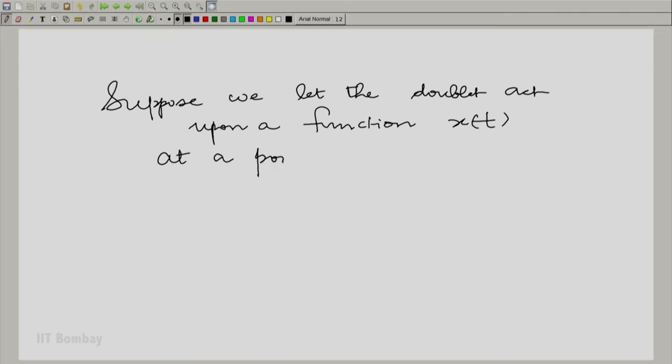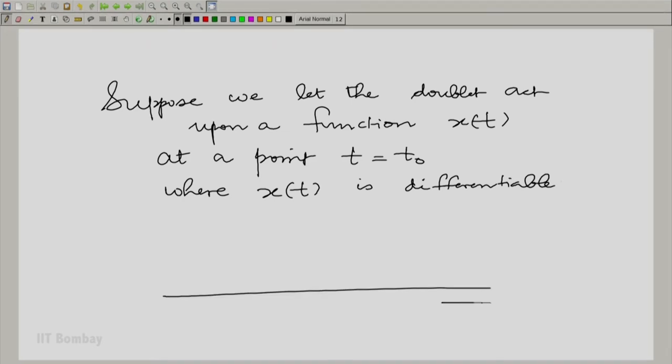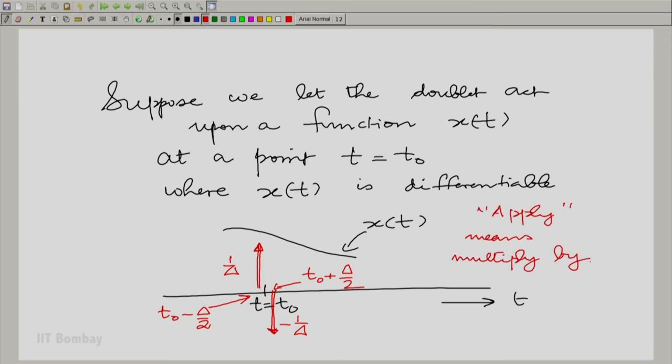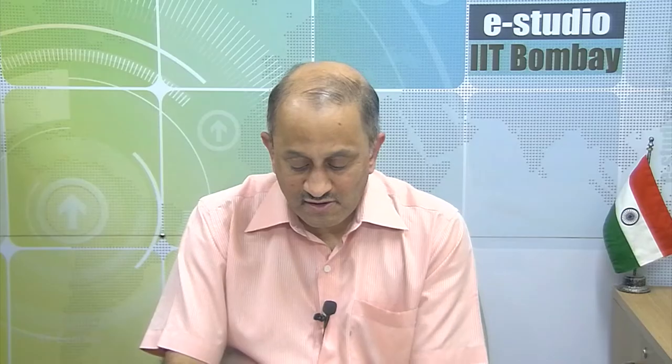suppose you applied this doublet upon a function x(t). At a point, say t equal to t₀, where x(t) is differentiable, so let us visualize the situation. You have this x(t). This is the point t equal to t₀ and you put this doublet here. Let us put the doublet there. You have two impulses coming closer and closer to one another. This point is t₀ minus delta by 2 and this point is t₀ plus delta by 2. So, suppose you applied it. Apply means multiply by the doublet and integrate. So, let us write out the integral. What happens when you apply the doublet?